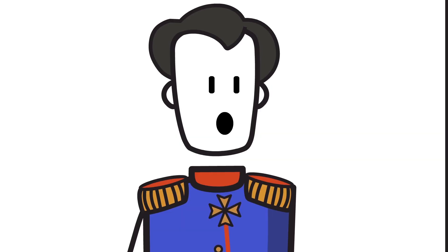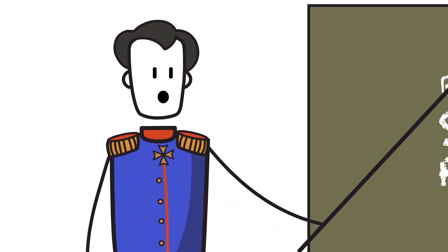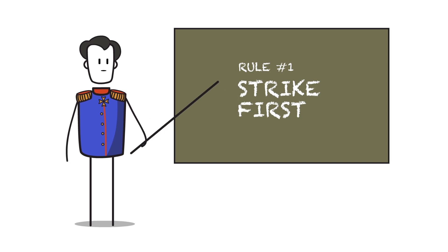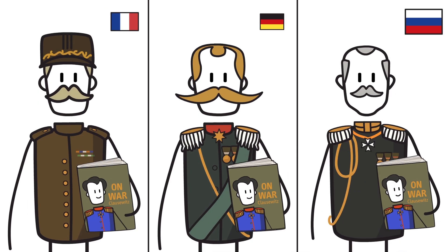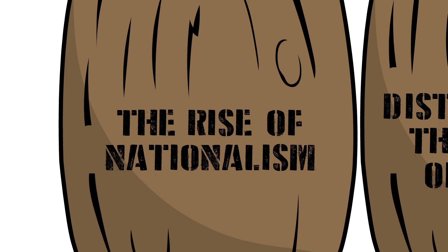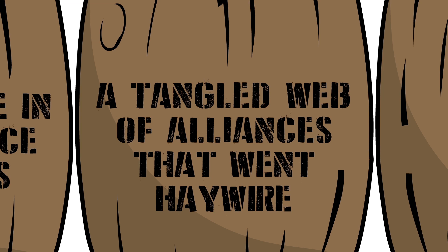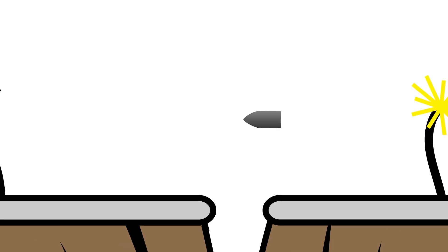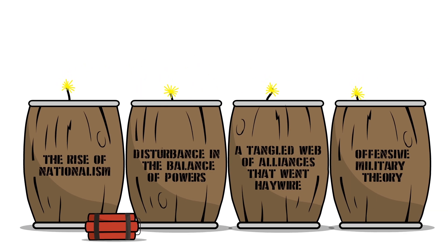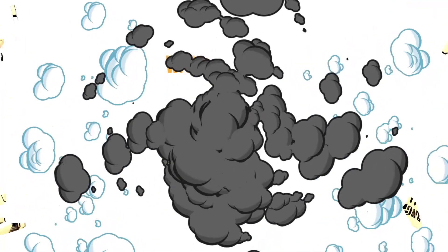Four: offensive military theory. Prominent military theories in the early 20th century gave utmost importance to the side who struck first. So just the fear of being attacked began an unstoppable race to war. Whether it was one or some combination of these reasons, it's pretty clear that Europe was already sitting on a powder keg, destined to explode. The shot heard around the world was merely the spark.